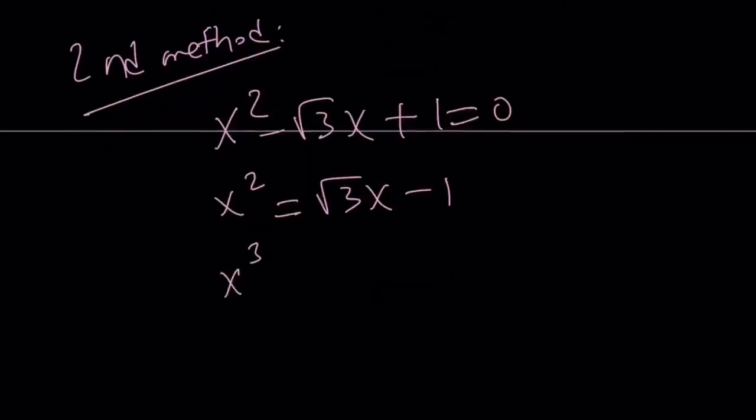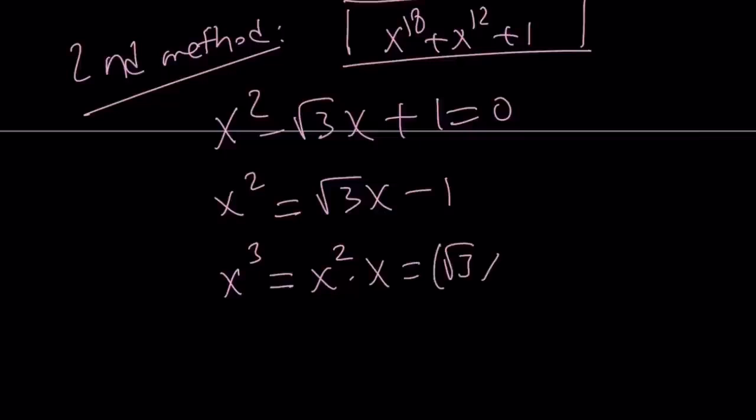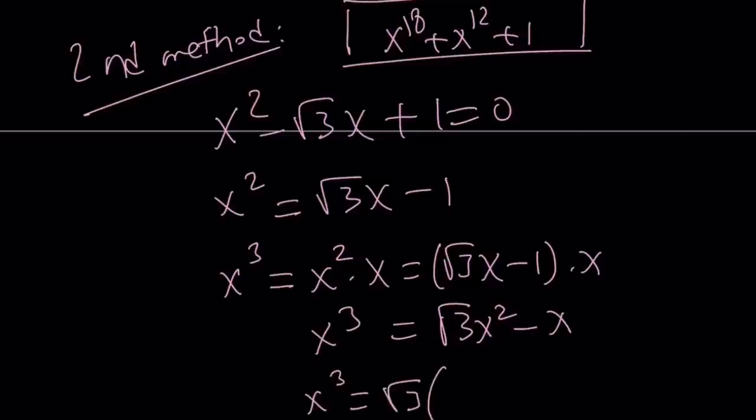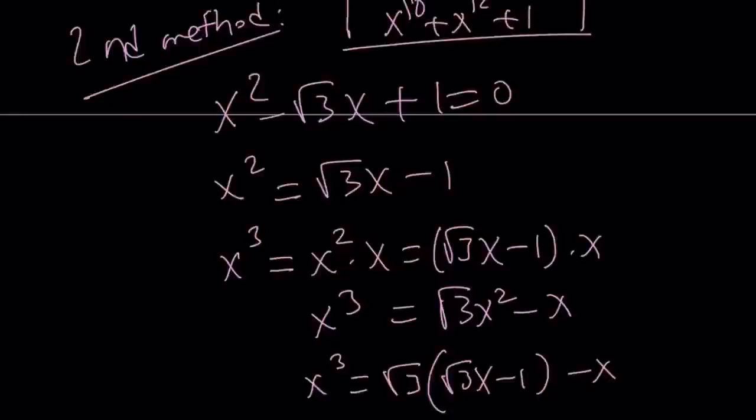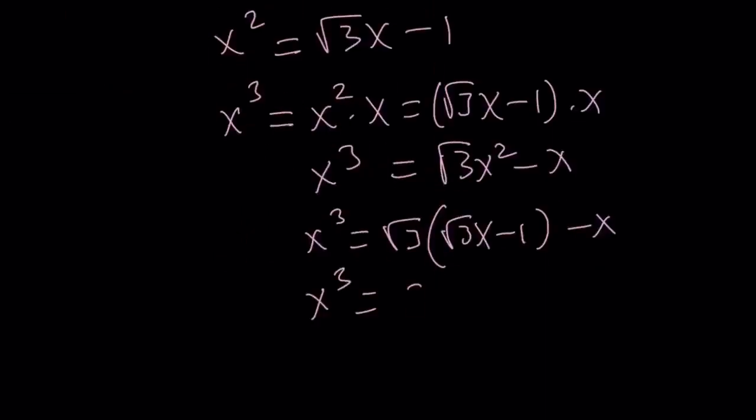For example, if I wanted to evaluate x cubed, by the way, the 18th power and the 12th power should kind of ring the bell because they're both multiples of 6 or multiples of 3. x to the 3rd power is x squared times x. But x squared is root 3x minus 1. Multiply by x, you get square root of 3x squared minus x. And then x squared can be replaced with square root of 3x minus 1. And then if you distribute, you're going to get 3x minus square root of 3 minus x. From here, x cubed is going to be 2x minus square root of 3.